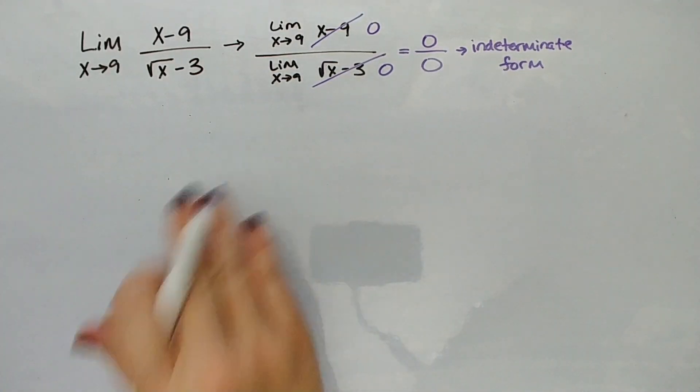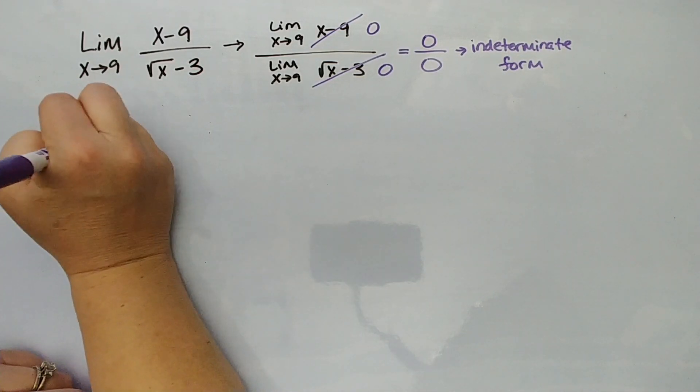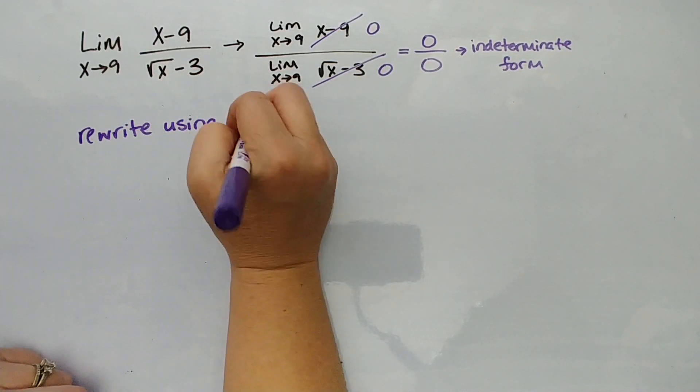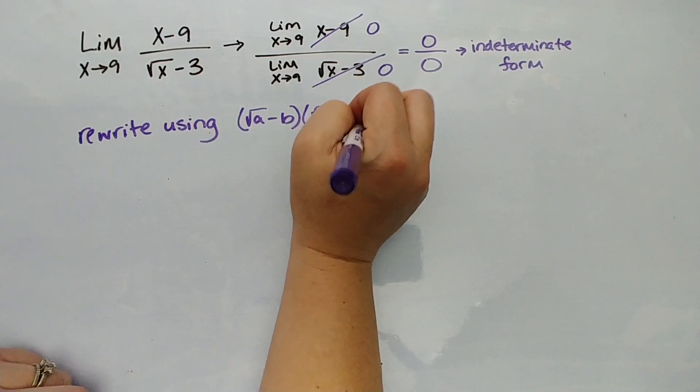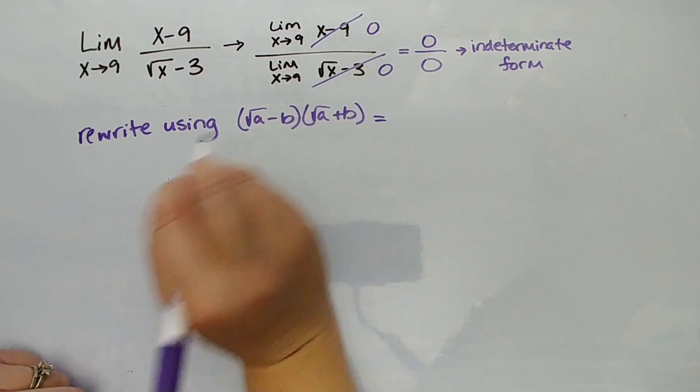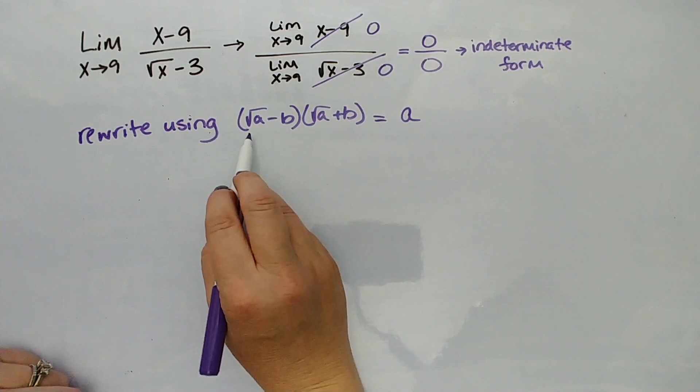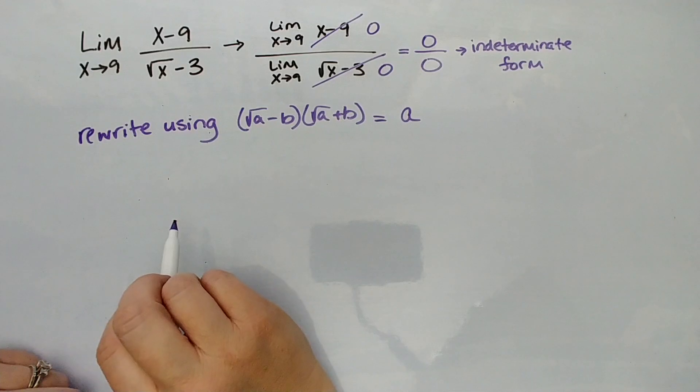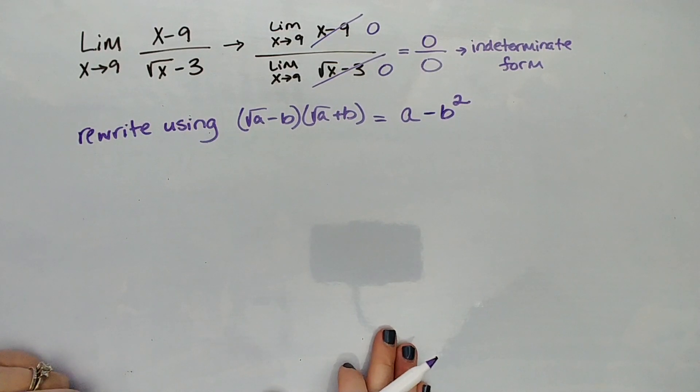What we want to do is rewrite this using something we learned in algebra. We're going to use that property that says if I have (√a - b)(√a + b) and multiply them, √a times √a gives us just a. Remember, squaring and square rooting are opposites, inverse operations. The positive b√a, negative b√a equal 0, and we get negative b squared. We're going to use that handy property to rewrite this.